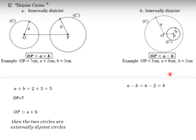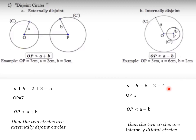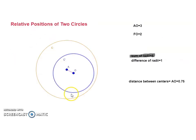To determine the relative position, we calculate A minus B and compare it with OP, which is given as 3 centimeters. We check: is OP less than A minus B? Since 3 is less than 4, yes — OP is less than A minus B, so the two circles are internally disjoint.